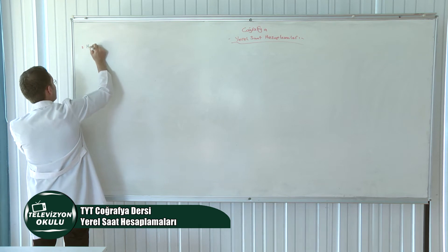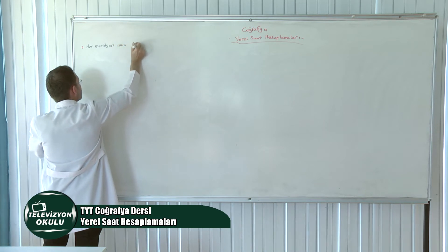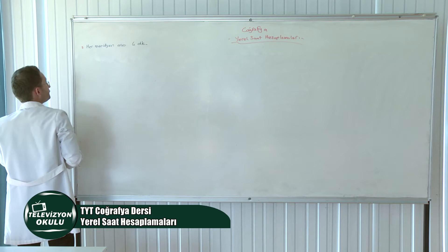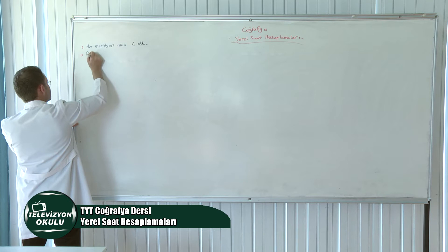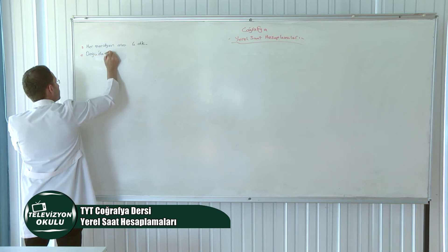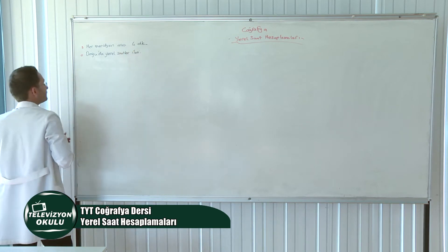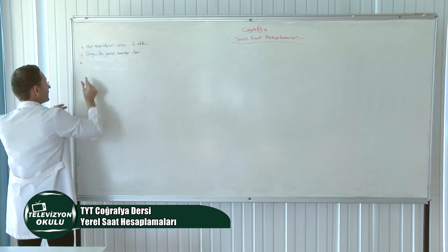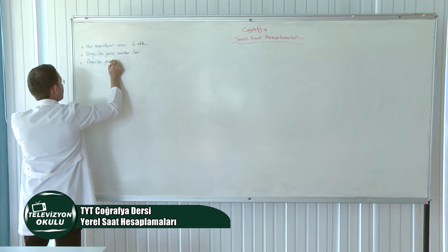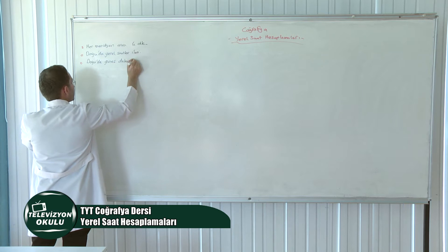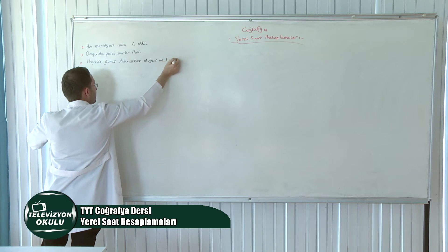Her meridyen arasının kaç dakika olduğunu biliyorduk — her meridyen arası 4 dakikadır. Doğuda yerel saatler ileridir. Doğuda güneş daha erken doğar ve batar.